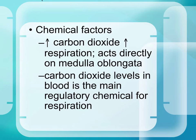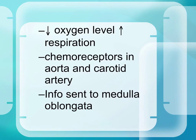The number one factor that increases respiration is an increased level of carbon dioxide in the blood — that acts directly on the medulla oblongata to increase respiration. A decrease in oxygen will also increase the respiration rate. There are chemoreceptors, especially in the aorta and the carotid artery, that regulate the amount of carbon dioxide and oxygen to regulate respiration, and all of that information is sent to the medulla oblongata.